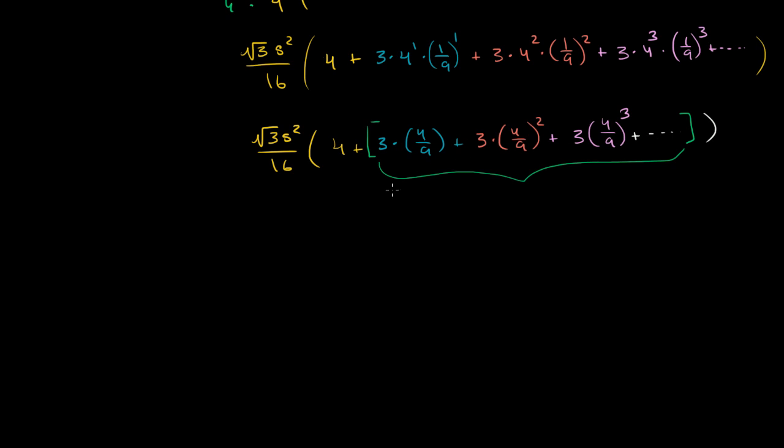So what I've just bracketed off can be rewritten as 3 times 4/9 plus (4/9)² plus (4/9)³, and you can go on and on and on, plus 4/9 to every other power all the way through infinity.